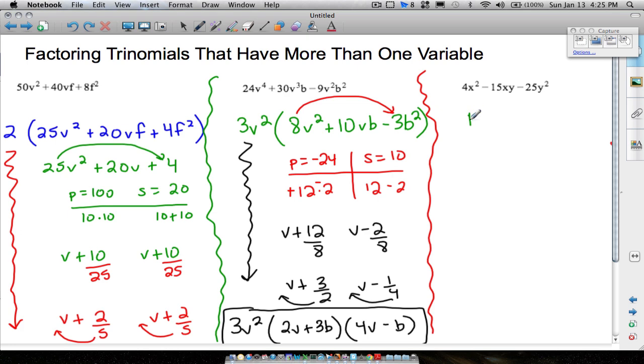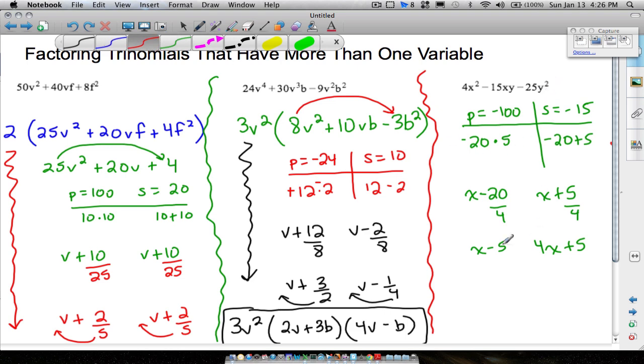Bottoms up here, 4 times negative 25. Our product is going to be negative 100. Our sum is equal to negative 15. So the two numbers that work here will be negative 20 and a positive 5. Because if you multiply those two numbers, you get negative 100. If you add those two numbers, you get negative 15. So we can come back and write this as x minus 20 and x plus 5. Don't forget to divide by 4. So we have x minus 5 when we simplify. And we can't simplify this, so we just bring the 4 up. We have 4x plus 5. Now we don't want to leave the answer like this because we need to get that y squared at the end. So just come back and stick in those y's.